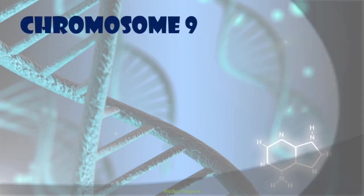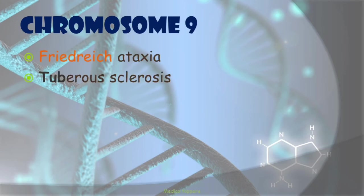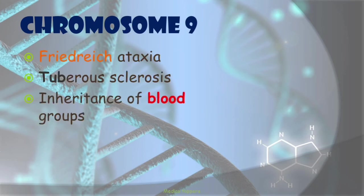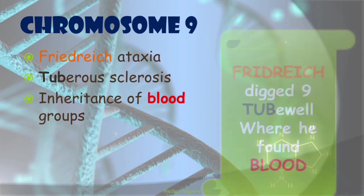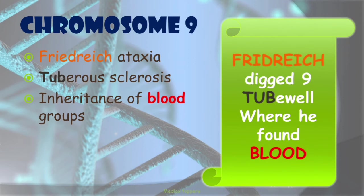Then comes chromosome 9. The associated conditions are Friedreich's ataxia, tuberous sclerosis, and inheritance of blood groups. The mnemonic is a thriller: 'Frederick dug 9 tube wells where he found blood.' So 'Frederick' is for Friedreich's ataxia, 'tube' is for tuberous sclerosis, and 'blood' is for inheritance of blood groups.